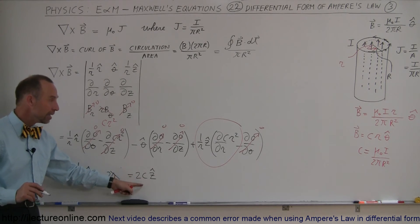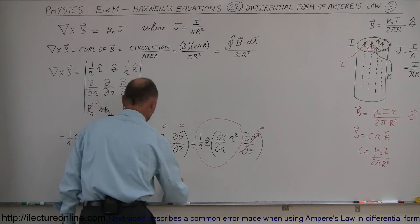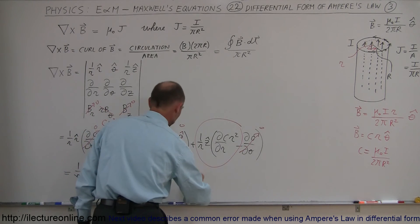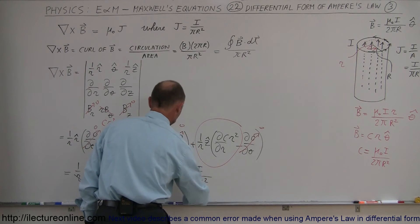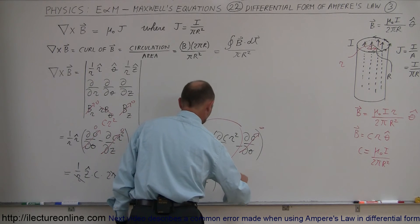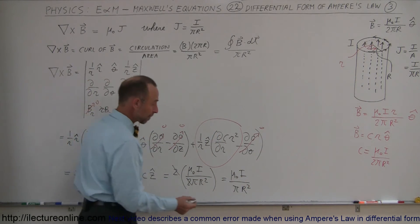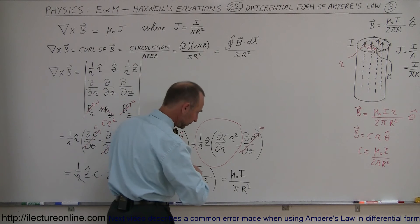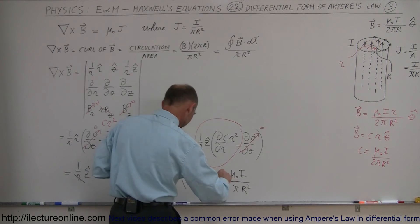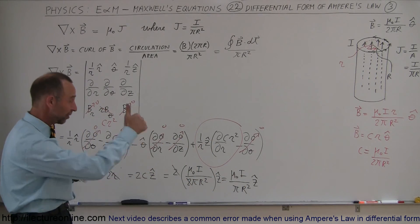The curl of B equals 2C in the z direction. Since C equals μ₀I divided by 2πR², this is equal to 2 times μ₀I divided by 2πR². The 2's cancel, and so this is equal to μ₀ times I divided by πR², in the z direction. I don't want to forget the unit vector — it's a vector quantity, so it's in the z direction.